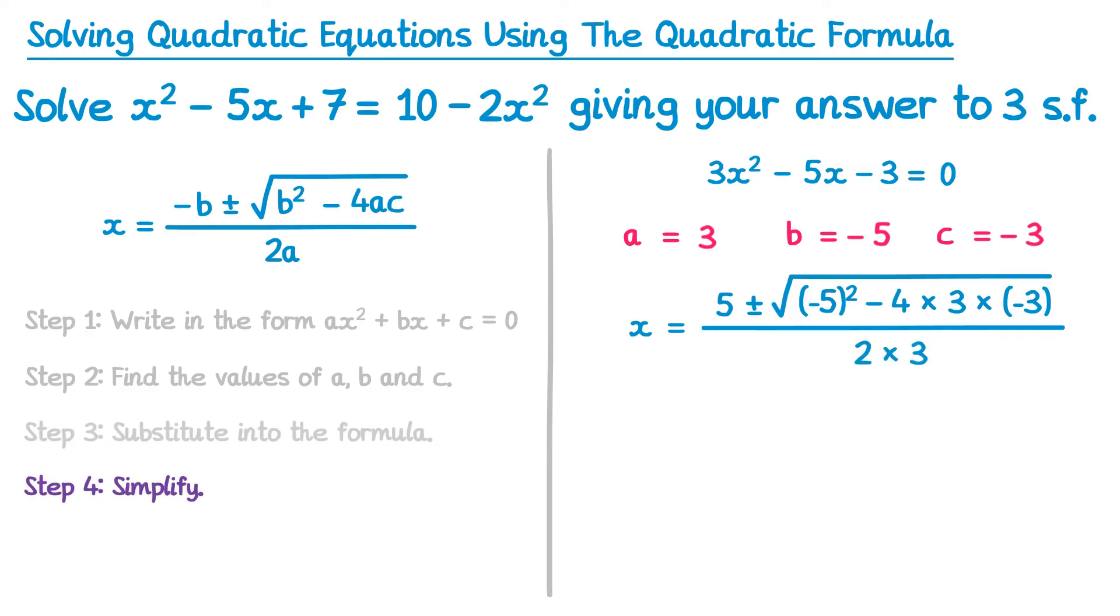We'll then go to step 4, which is to simplify. So x equals, we'll keep the 5 and the plus or minus, and then we have the square root. Again, at this point you might just want to type what's inside the square root into your calculator. So negative 5 in a bracket squared, minus 4 times 3 times negative 3. And that will give you 61. All over 2 times 3, and 2 times 3 is 6.